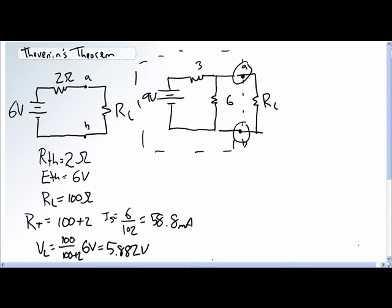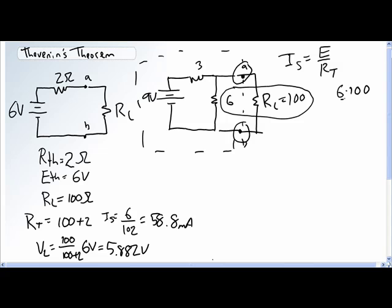Now compare and contrast when RL is equal to 100 ohms. IS is equal to the applied voltage divided by the total resistance. So 6 is now in parallel with 100. So 6 times 100 divided by 106 is going to give us a total resistance of 5.66 ohms.